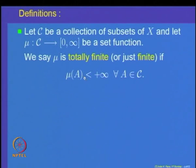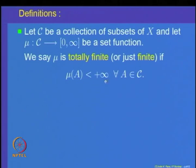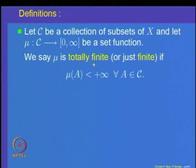Let us look at what is called a totally finite measure. A measure is called totally finite if mu(A) is finite for every subset A in the domain of mu. So, C is a collection of subsets and mu is a set function. We say mu is totally finite — or sometimes simply finite — if mu(A) < +infinity for all A belonging to C.